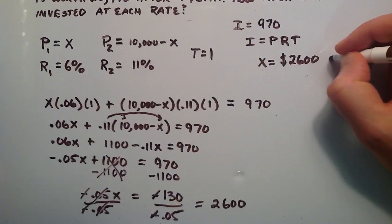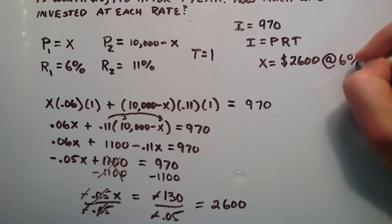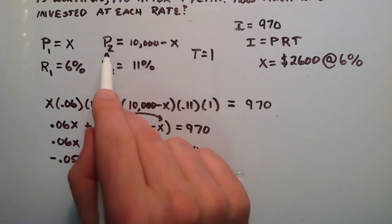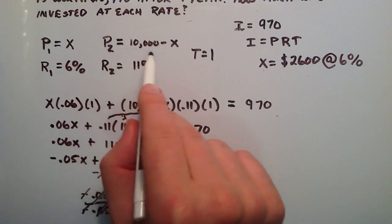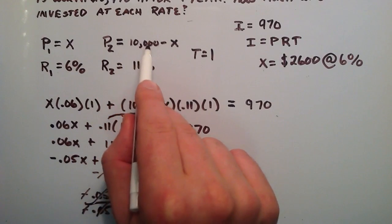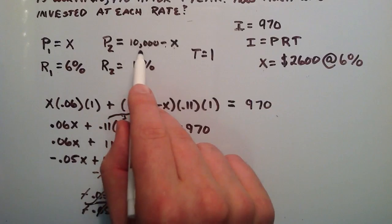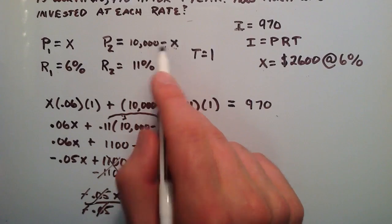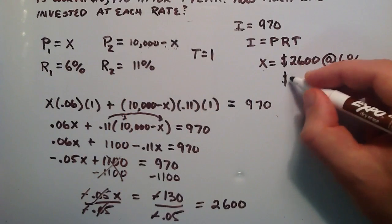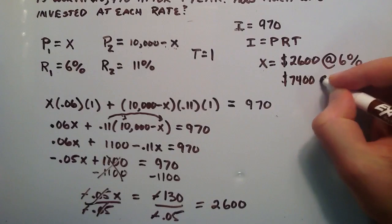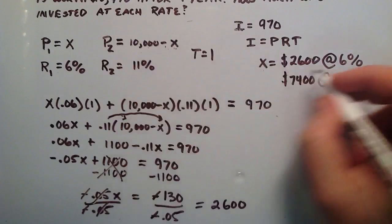So we have $2,600 at 6% interest, and then P₂ would be the amount invested at 11%. So 10,000 minus our X, X was 2,600. 10,000 minus 2,600 is going to give us $7,400. And that would be at the other rate of 11%.